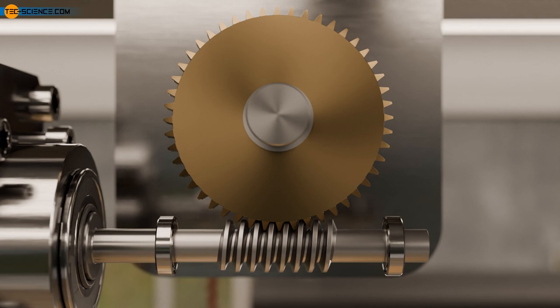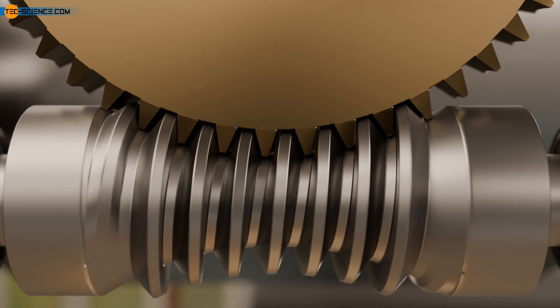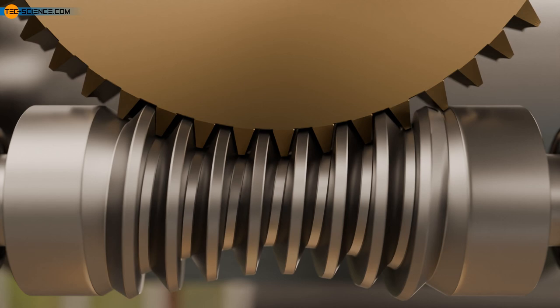In a modified version, the shape of the worm describes an arc, which is adapted to the shape of the globoid worm wheel. This is known as a globoid worm or enveloping worm. Compared to a cylindrical worm, more sections of a globoid worm mesh with the worm gear. Globoid worm drives can therefore transmit higher torques than cylindrical worm drives.